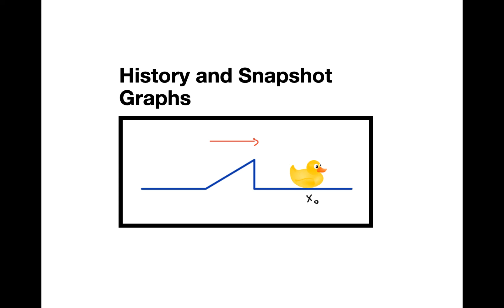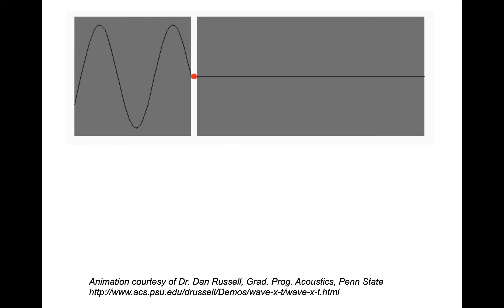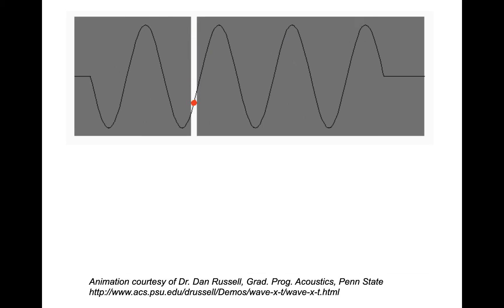Hi everyone! I want to talk about one of the more difficult things that comes up in waves — snapshot and history graphs — and I just want to try to explain the difference between them using this little graphic here.